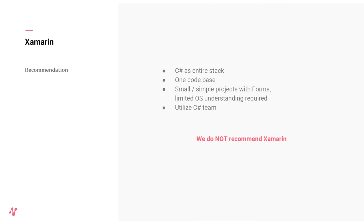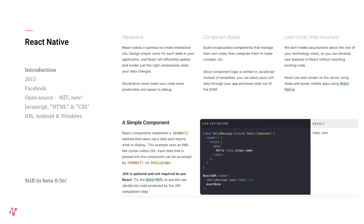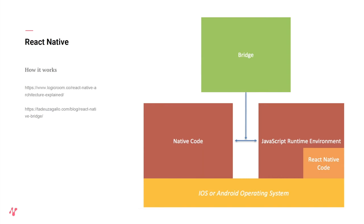The last one in the presentation is React Native — one of the newer ones, introduced in 2013 by Facebook. It's open source and recently moved to an MIT license. You can do iOS, Android, and Windows, though Windows is probably out. The way it works is you have a JavaScript runtime environment compiled down for iOS — it's part of the OS on iOS and comes bundled with the application on Android. You can do both JavaScript and native code in the same app, which is pretty cool, but every time you need to communicate between JavaScript and native code, you have to go through what they call the bridge.